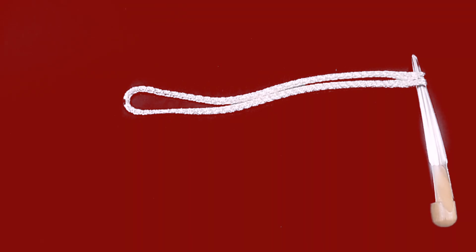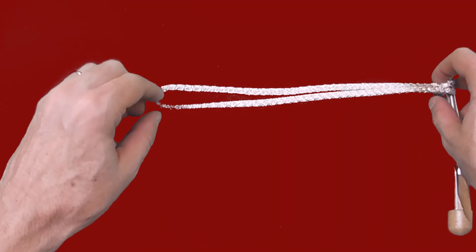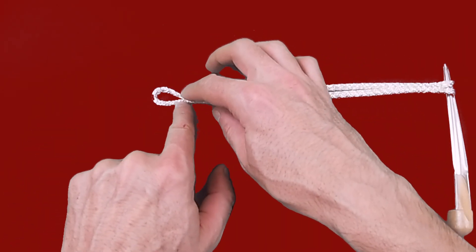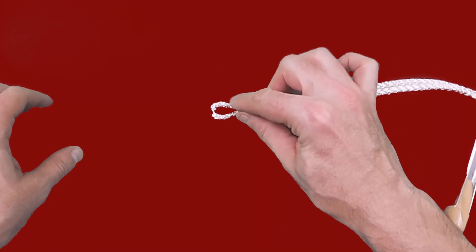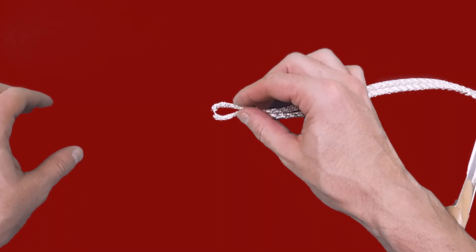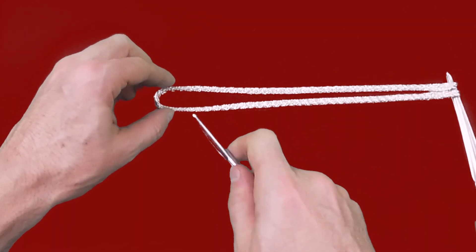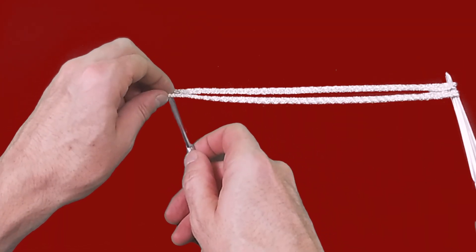The locking loop is completed by pulling the line through on itself and you want to only have a couple of diameters of the rope for the size of the eye.